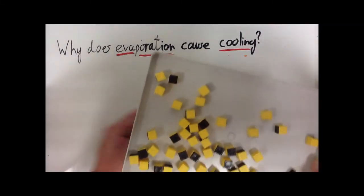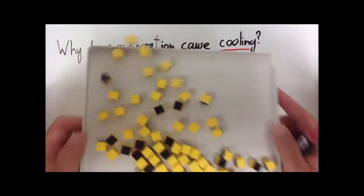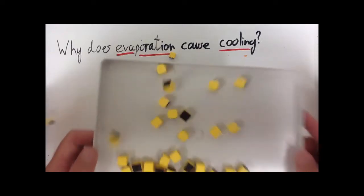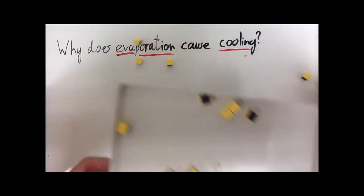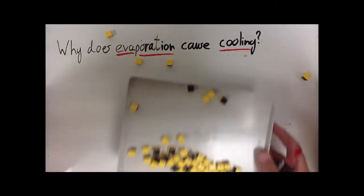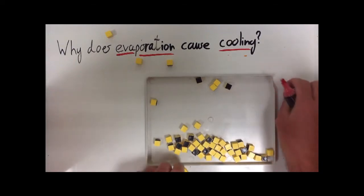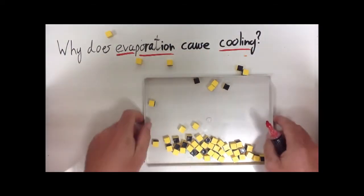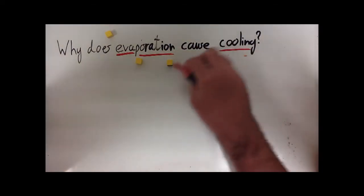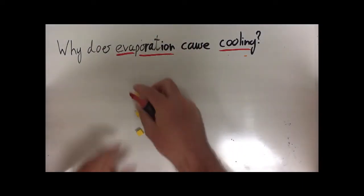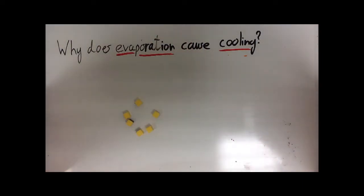Okay, so we've got our water dish here. We shake it around, adding more energy to the particles. Now you can see that many of these particles are just up and left. They've got lots and lots of kinetic energy. Now, how can we explain why this creates cooling?